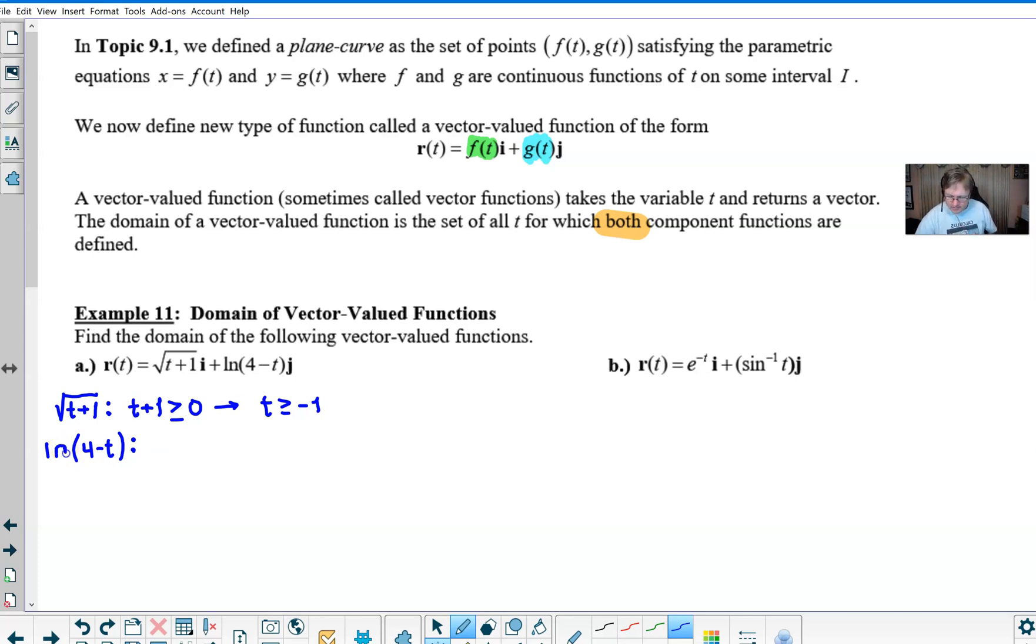Because the natural log cannot act upon a negative number, nor can it act upon zero. So you have to know that four minus t has to be strictly positive. It can't even be equal to zero. So when you solve by adding the t over, t would be less than four. Now, in order to answer the overall question, what is the domain of this vector-valued function, you have to take the intersection of these two sets.